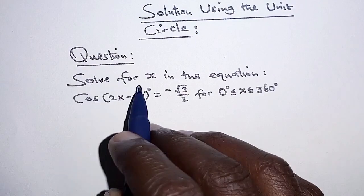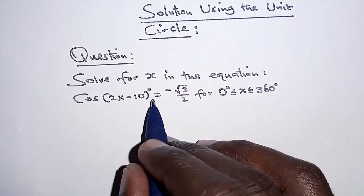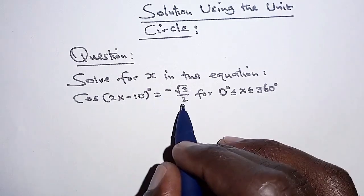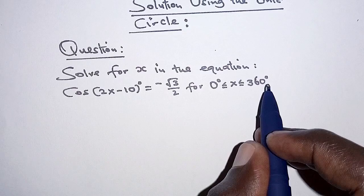The question is solve for x in the equation cosine of 2x minus 10 equals negative root 3 over 2 for the values of x ranging between 0 and 360 degrees.